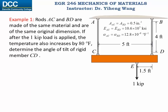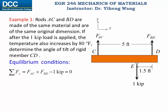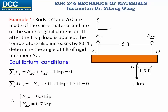Both the temperature change and the force developed in the rods will cause the rods to deform, and we need to determine the angle of tilt of this rigid member after equilibrium. From what we've learned in statics, we draw the free body diagram of the rigid member CD showing the two unknown forces FAC and FBD. We write two equilibrium equations: resultant force along the y direction equals zero, and resultant moment about point D equals zero. Since there is no horizontal force, we only have two unknowns, so two equations and two unknowns allows us to solve for FAC and FBD.